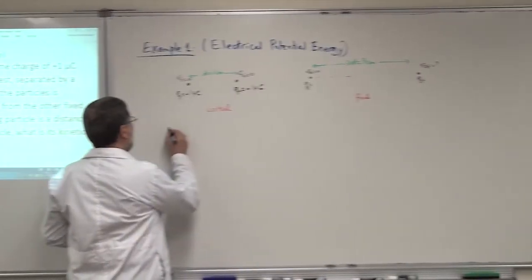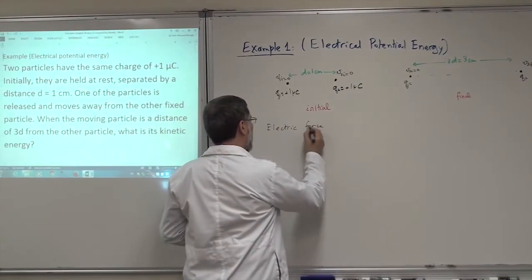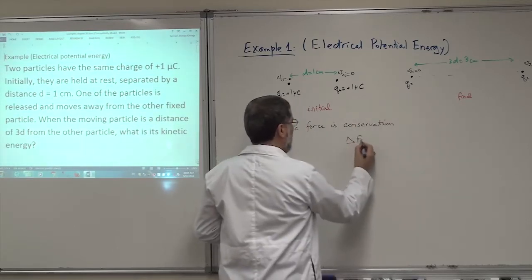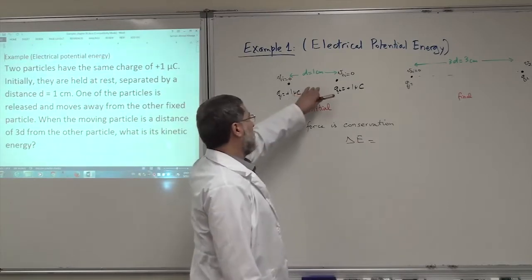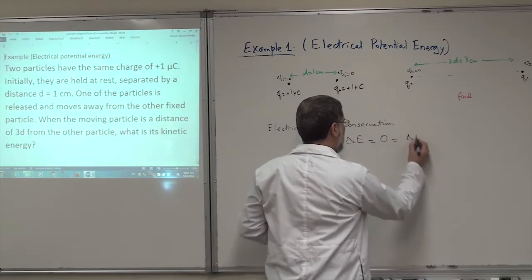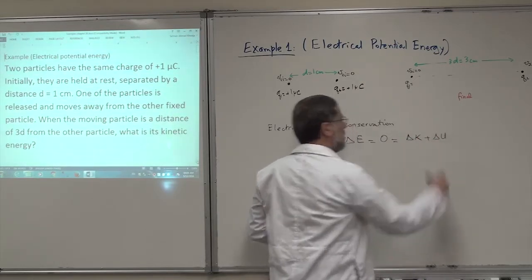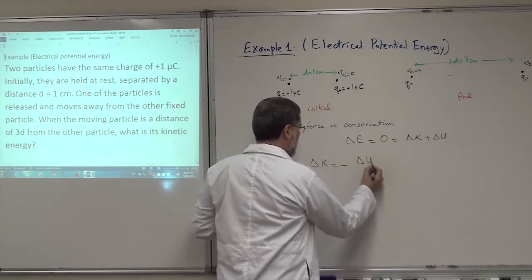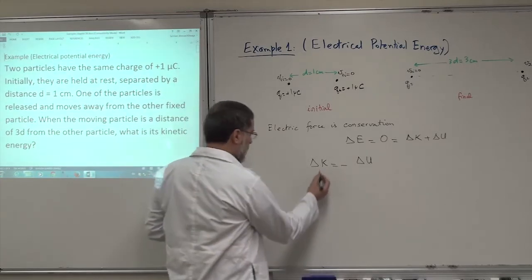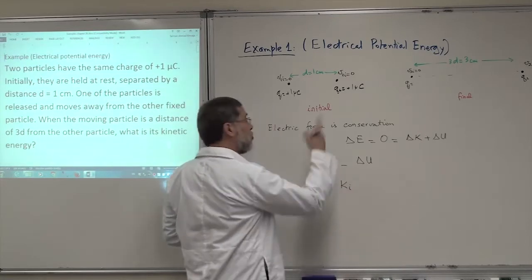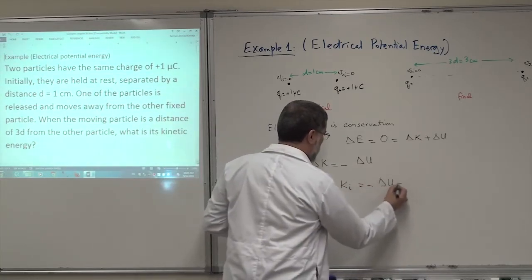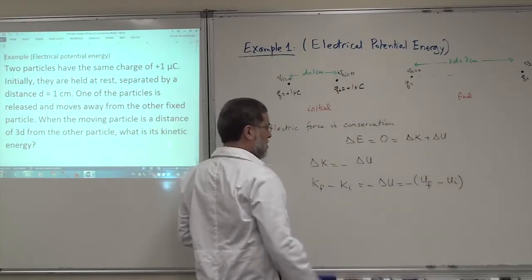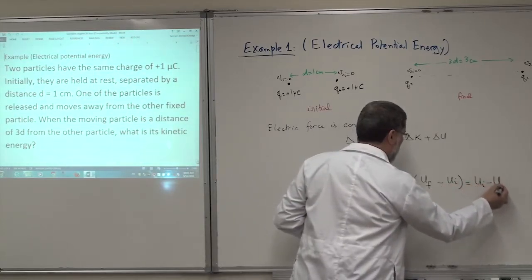The electric force is conservative. That means the change in mechanical energy — the total energy of the system between the initial and final states — is zero. So the change in kinetic energy plus the change in electrical potential energy equals zero, meaning delta K equals minus delta U, which is U initial minus U final.